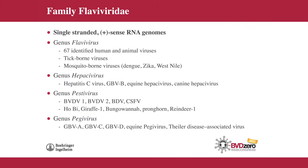The newest genera in the Flaviviridae is the Pegivirus genus — a very recent group. It includes several GB viruses isolated from a human patient designated GB. Of interest are several newly recognized species within this genus, including the equine pegivirus and the Theiler's disease-associated virus. Both of these viruses are found in horses and are very similar to hepatitis C in that they cause liver problems. The Theiler's disease-associated virus is also termed serum sickness virus or serum hepatitis virus, and is associated with blood transfusions in horses, creating a hepatic syndrome.